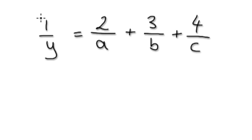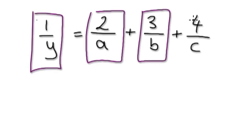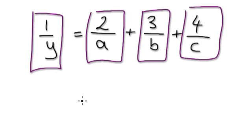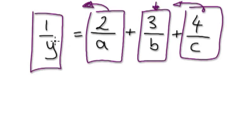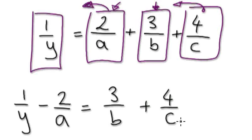So to do this, visualize it as this. You've got one bubble here. So here you've got four blocks. You want to make B the subject, and B is stuck in this bubble. So get rid of these two — get rid of this one and this one. Inside your mind, take away this bubble here. So it would be 1 over Y, take away 2 over A.